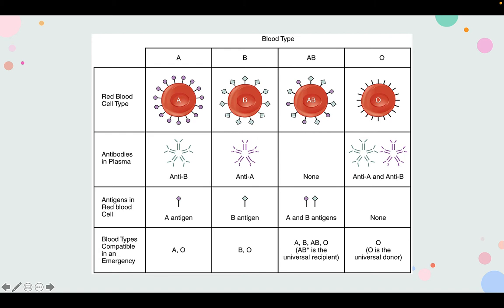People with type O, on the other hand, have no A or B antigens on their surface. So they have both A and B antibodies circulating through their blood, making them universal donors. They can give their blood to anybody because they won't have any antigens to be recognized.